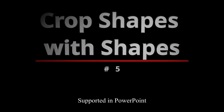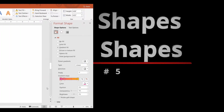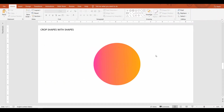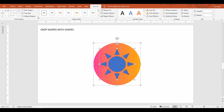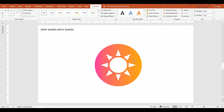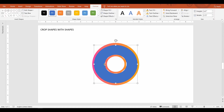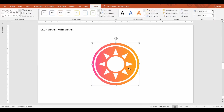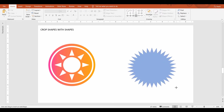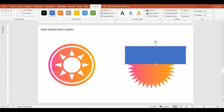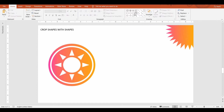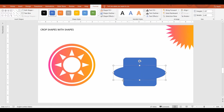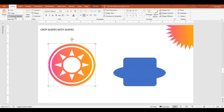Crop shapes with shapes. When you need a custom shape, you may use multiple shapes to create that using the merge shape technique. If you need to crop a part of the shape for corner placement, you may do that. With the merge shapes command, there are multiple options that crop different parts of the shapes.